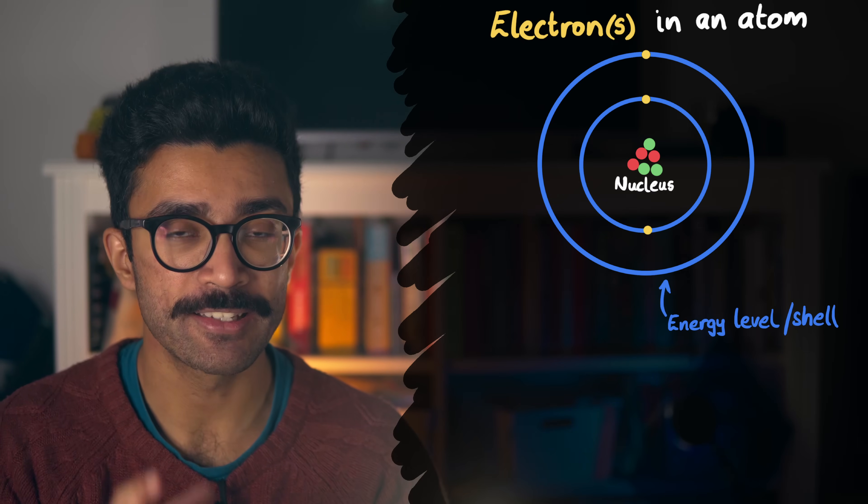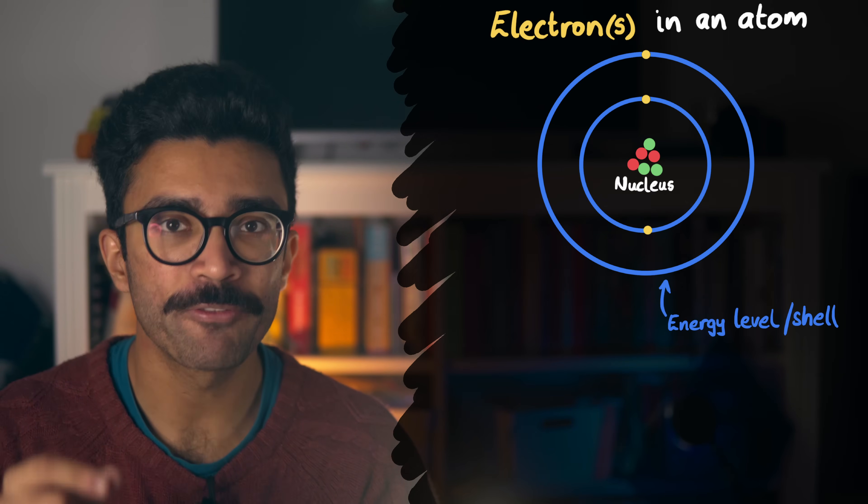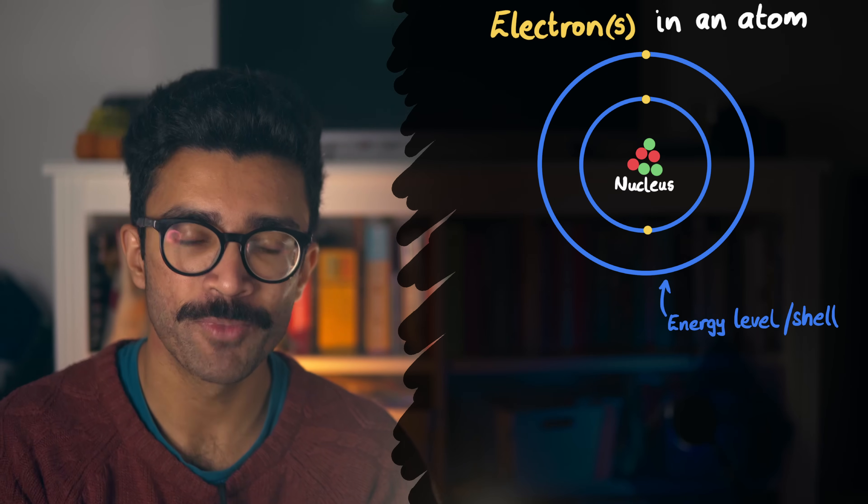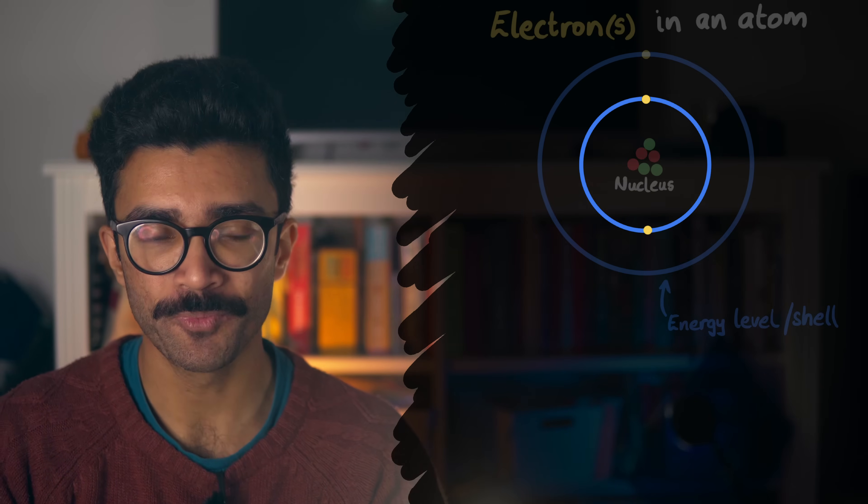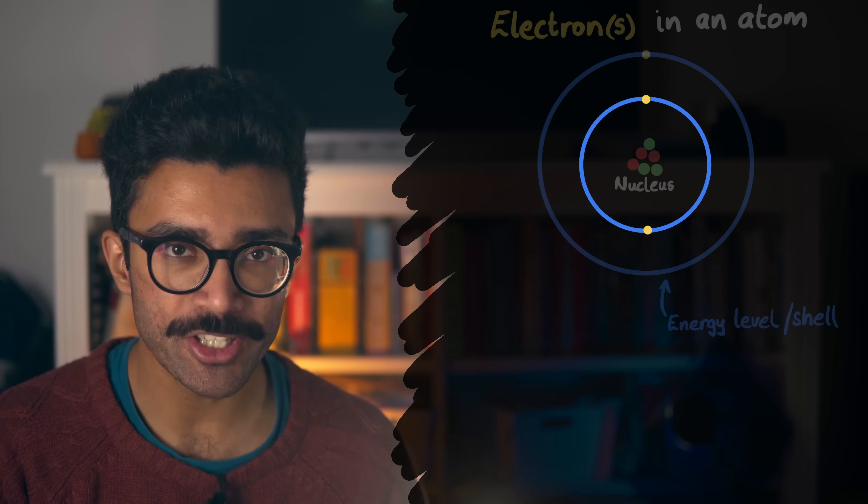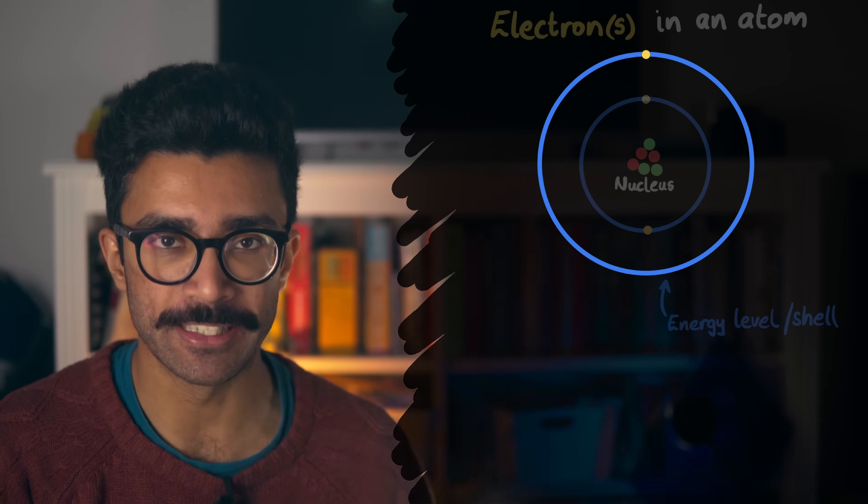These energy levels simply represent the amount of energy an electron has in each case. So, in a lower energy level, the electron has a lower amount of energy, and vice versa. That's basically the gist of it.